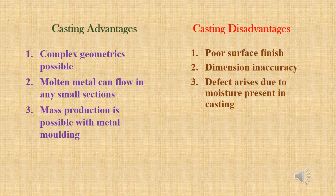Casting advantages: First, complex geometrics are possible. Second, molten metal can flow into any small section, so any shape is possible using casting. Third, mass production is possible with metal molding, and it is also a very easy process. Casting disadvantages: First, surface finish is a little poor, so machining is required. Second, dimension inaccuracy — this happens because of metal shrinkage while cooling. Third, defects arise due to moisture present in casting.